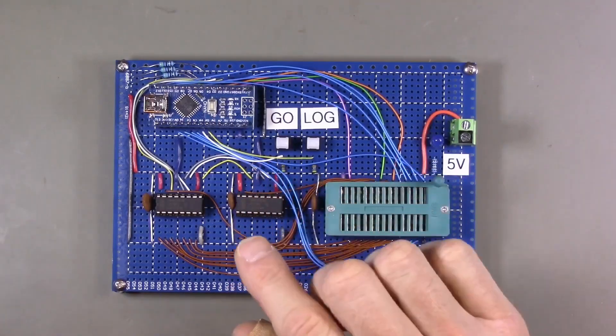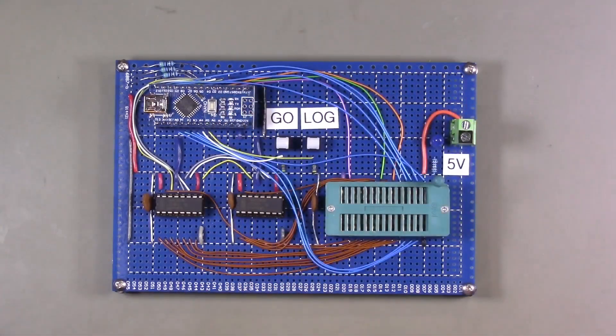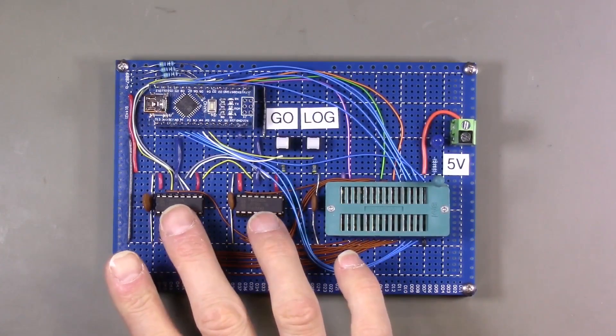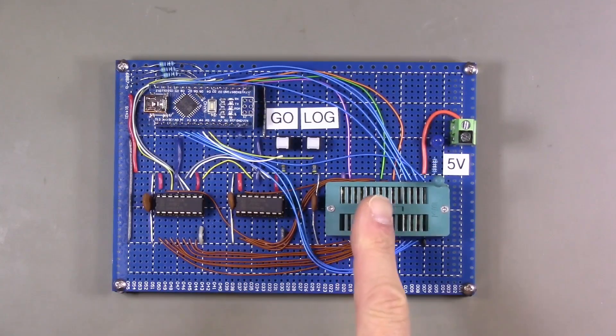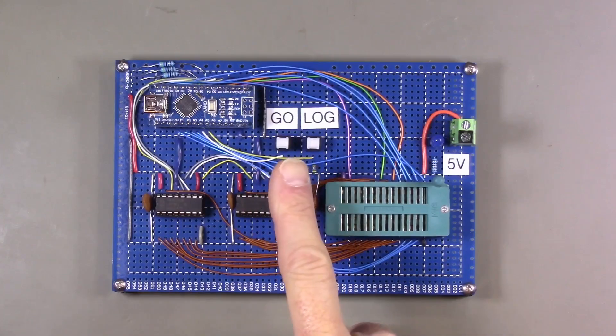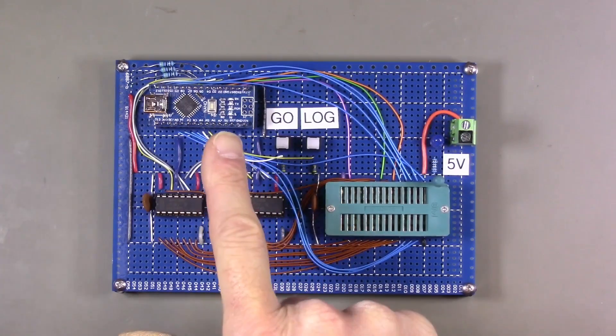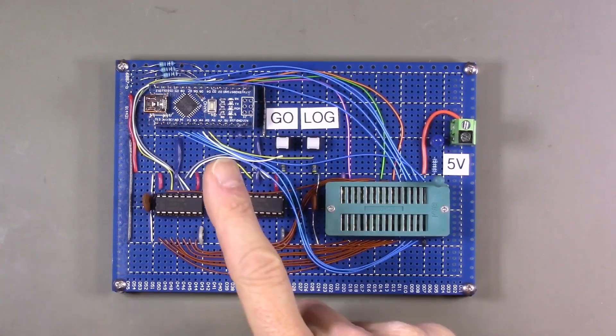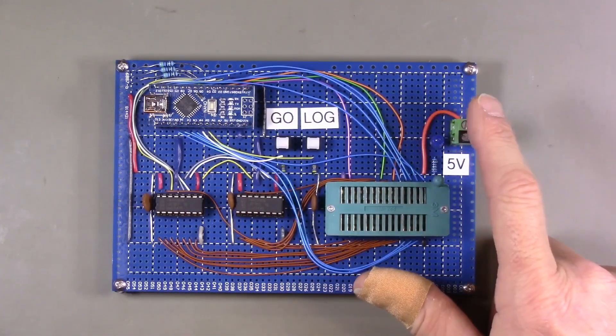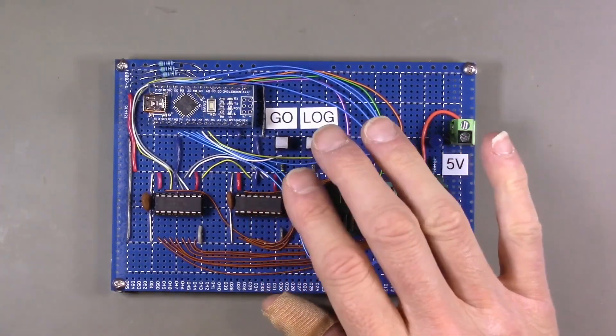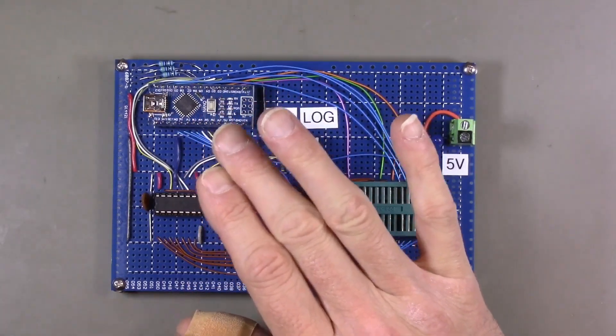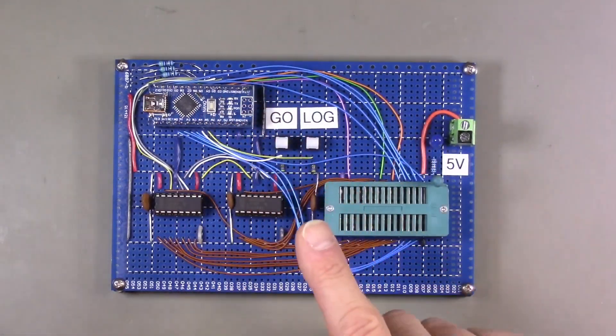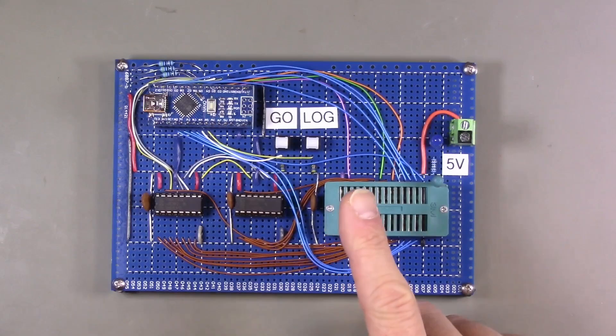It's a pretty simple device. There's an Arduino Nano, which is the brains of the operation. There are two 74HC595 shift registers that are used to generate an address to send to the M48T59Y device. There are a couple of buttons to basically control whatever Arduino sketch is running on the Arduino.